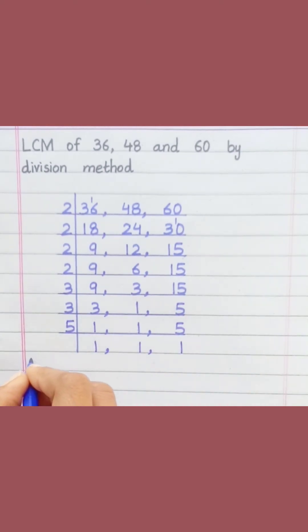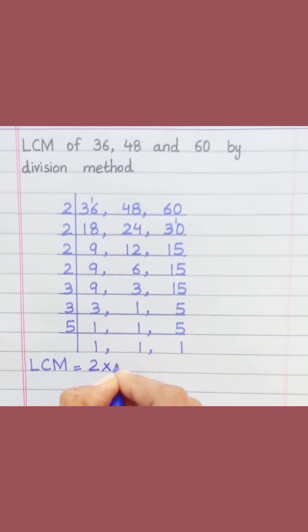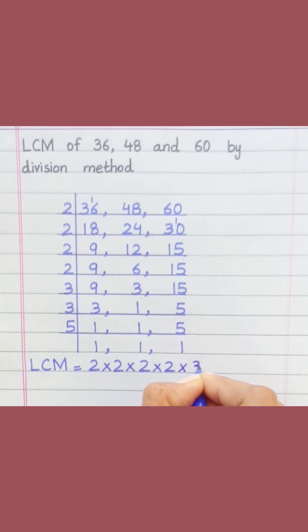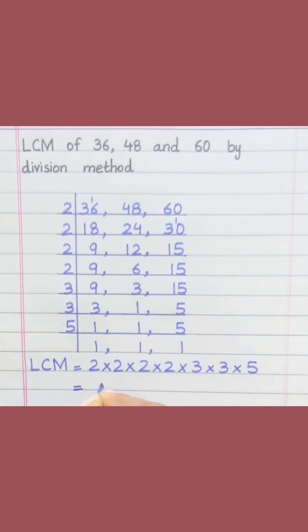LCM equals 2 multiply 2 multiply 2 multiply 3 multiply 3 multiply 5, which equals 720.